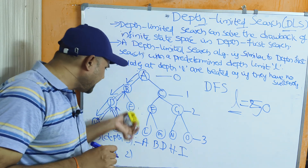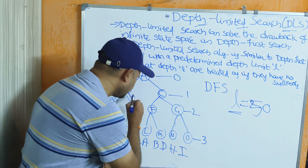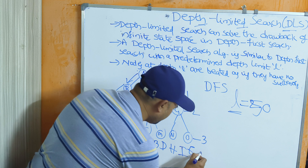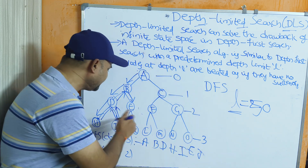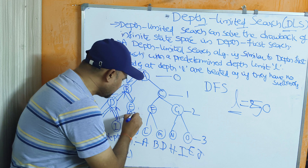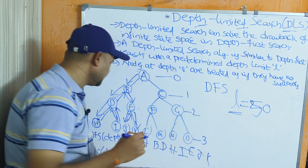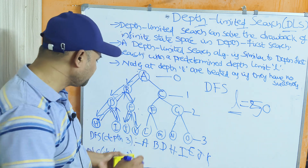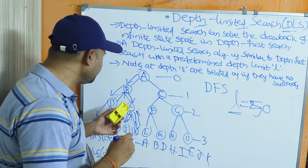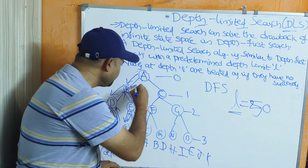Backtracking to B, the right-hand part is unexplored. We move to E, then explore J, which is a dead end. Backtrack, then explore K — no children of K either. Backtrack again; no remaining children of E, then no remaining children of B, so backtrack.